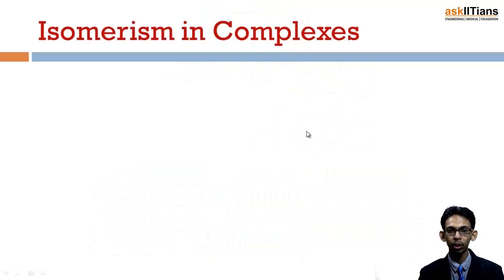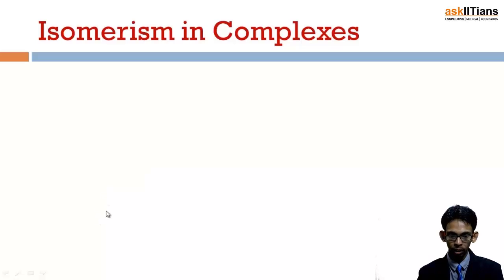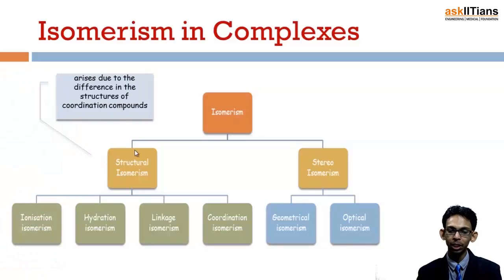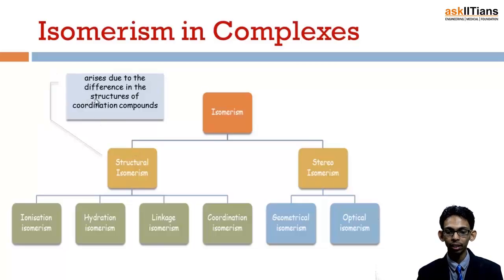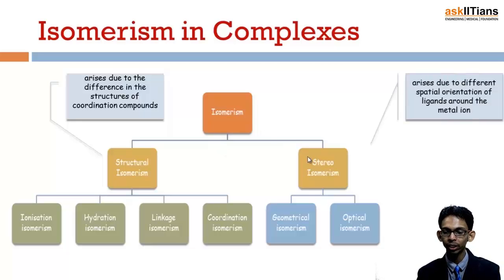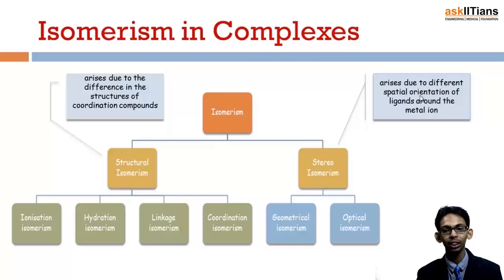There are two types of isomerism shown by coordination compounds: structural isomerism and stereo isomerism. Structural isomerism arises due to difference in structure of coordination compounds and is of four types: ionization isomerism, hydration isomerism, linkage isomerism, and coordination isomerism. Stereo isomerism arises due to different spatial arrangement of ligands around the metal ion and is of two types: geometrical isomerism and optical isomerism.